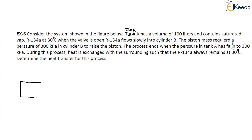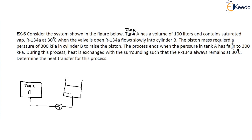The system consists of Tank A connected via a supply line and valve to Cylinder B, which has a piston-cylinder arrangement. Gravity acts downward, and the valve connects the two components.